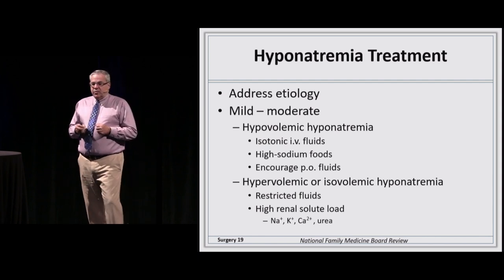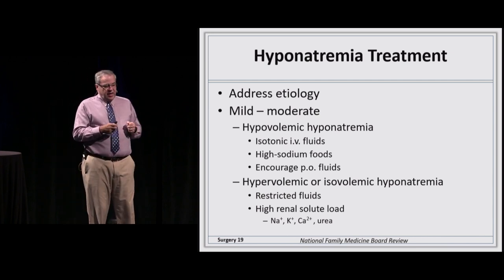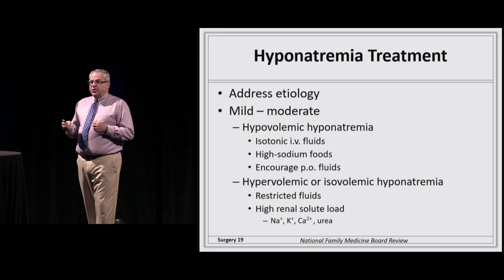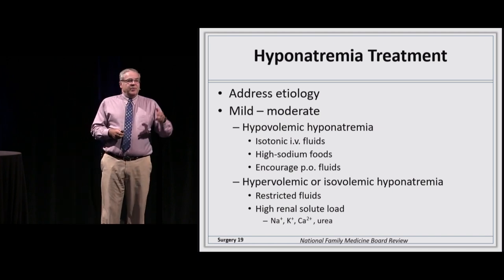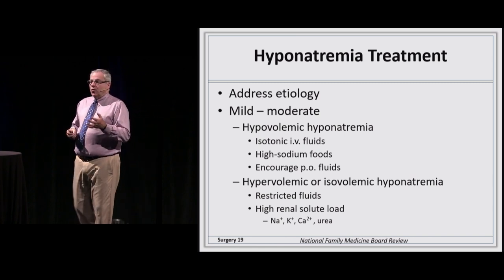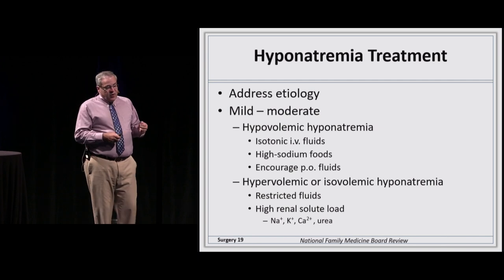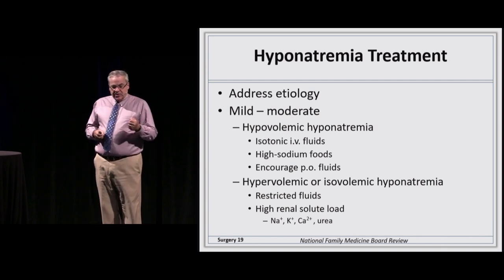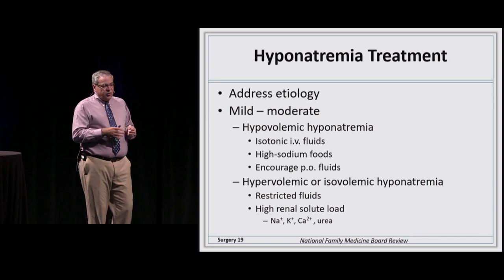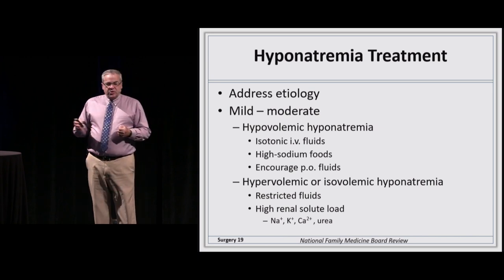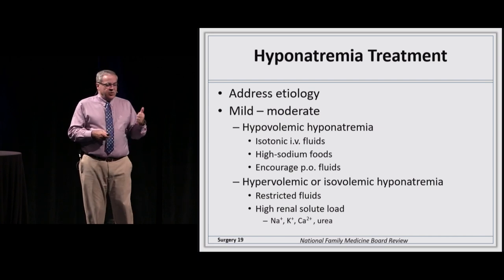To treat hyponatremia, first address the underlying etiology or it will be refractory. For mild to moderate hypovolemic hyponatremia, give isotonic IV fluids, encourage dietary salt, and ensure oral fluid intake — especially electrolyte-containing fluids like Gatorade. For mild to moderate hypervolemic or isovolemic hyponatremia, restrict fluids and use a dietary renal solute load including excess sodium, potassium, calcium, and urea.